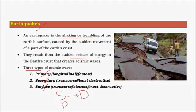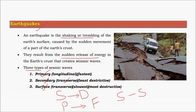Primary waves arrive first, before all other waves. Secondary waves, which are transverse in nature, are the slowest waves. Primary waves are the fastest, secondary waves arrive next, and surface waves are the last to arrive.